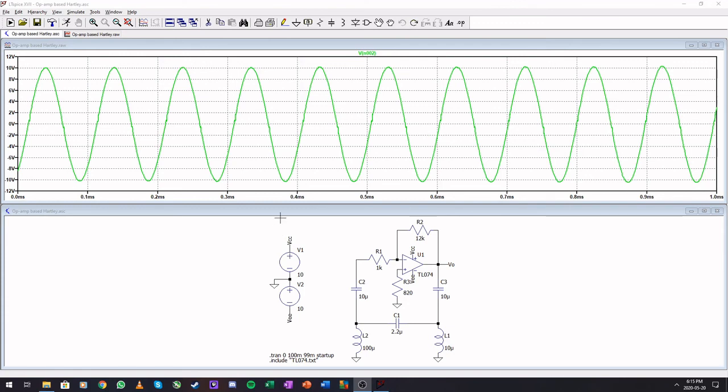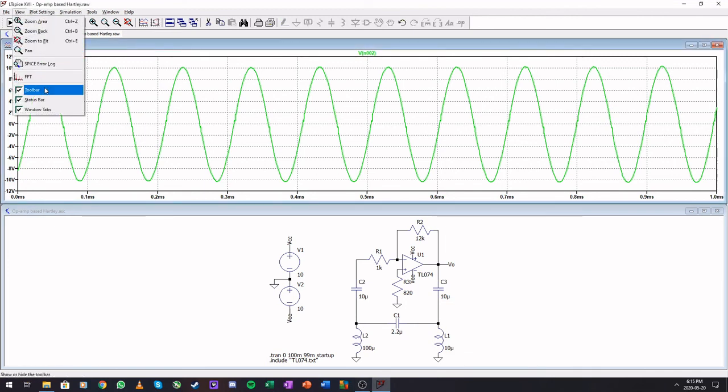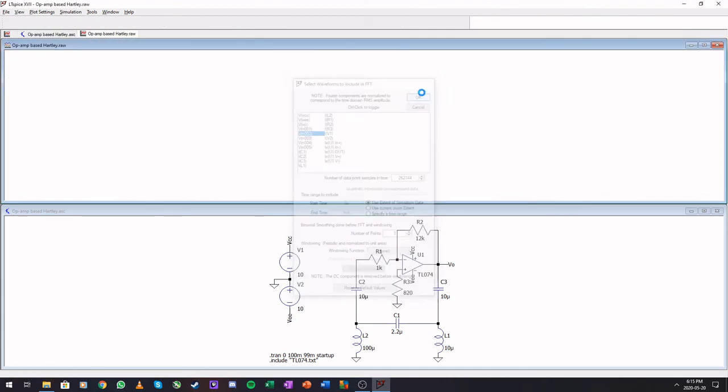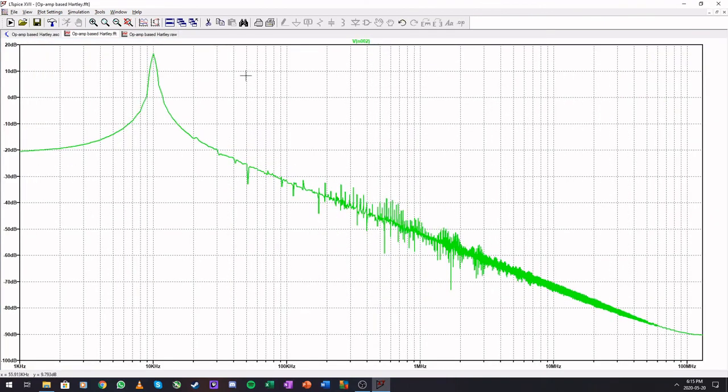So I ran our Hartley implementation and you'll see that it provides a nice sinusoidal output. Let's check the FFT BJT and nicely at 10 kilohertz. Let's jump over to the BJT implementation.